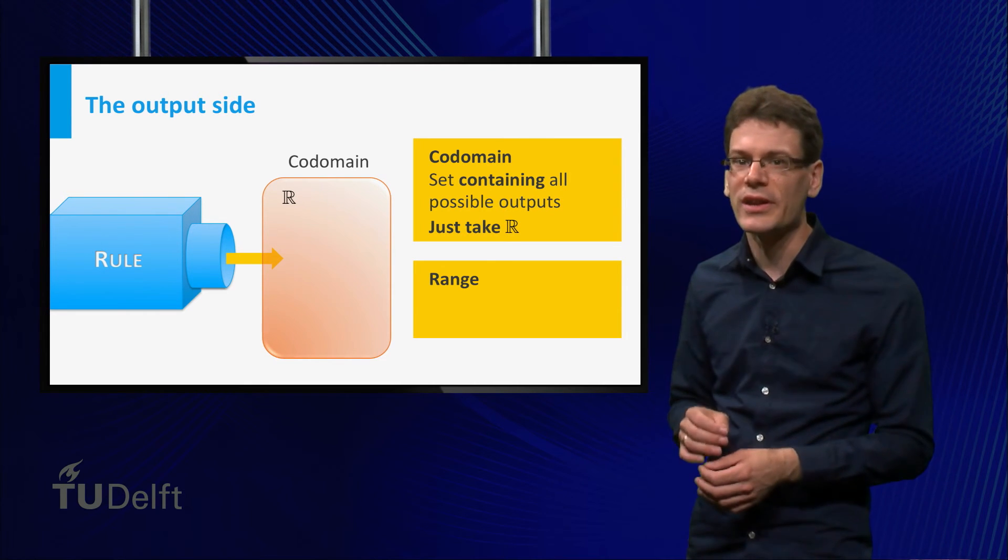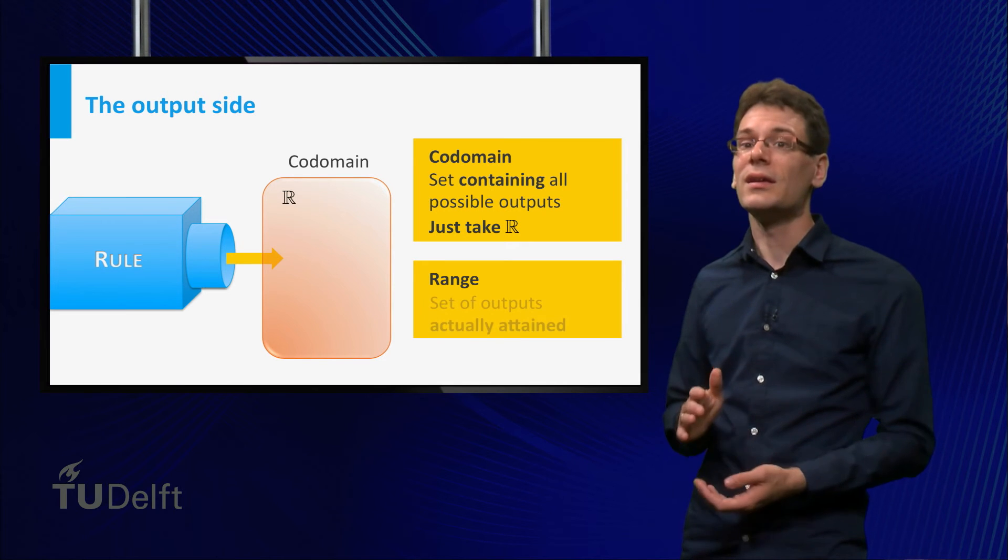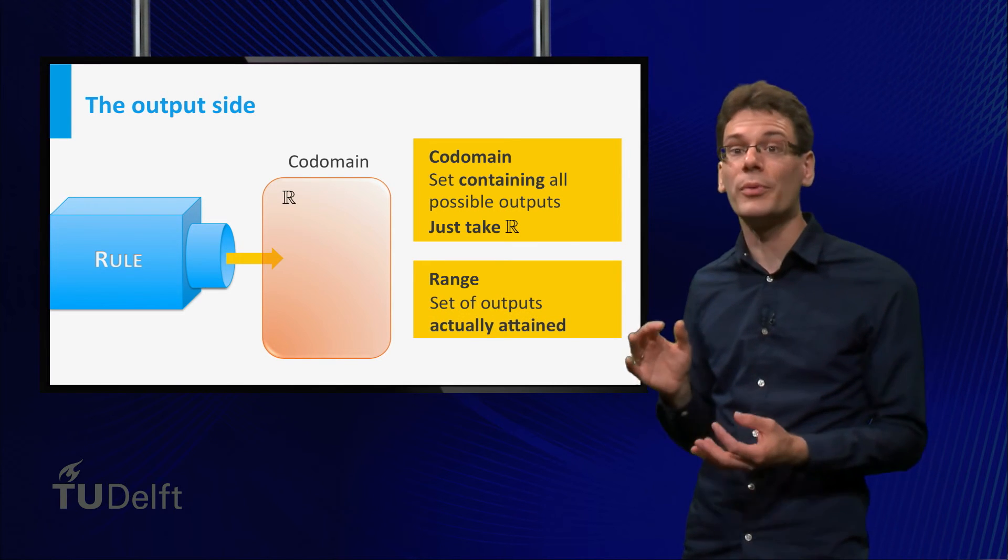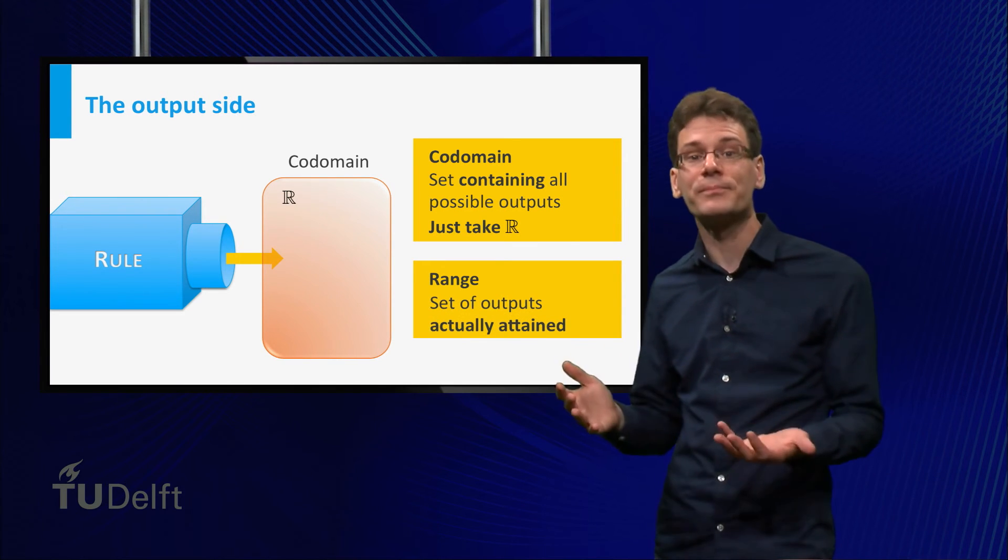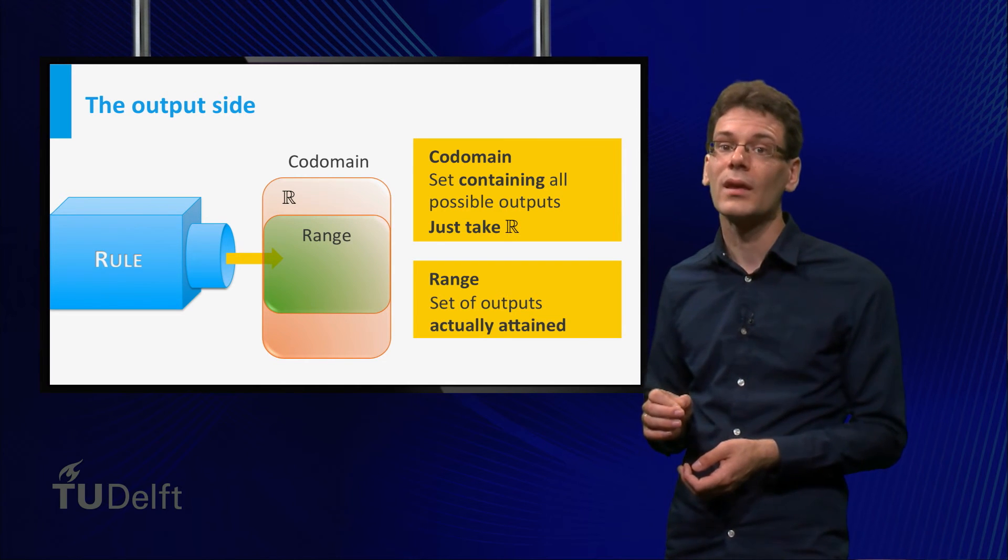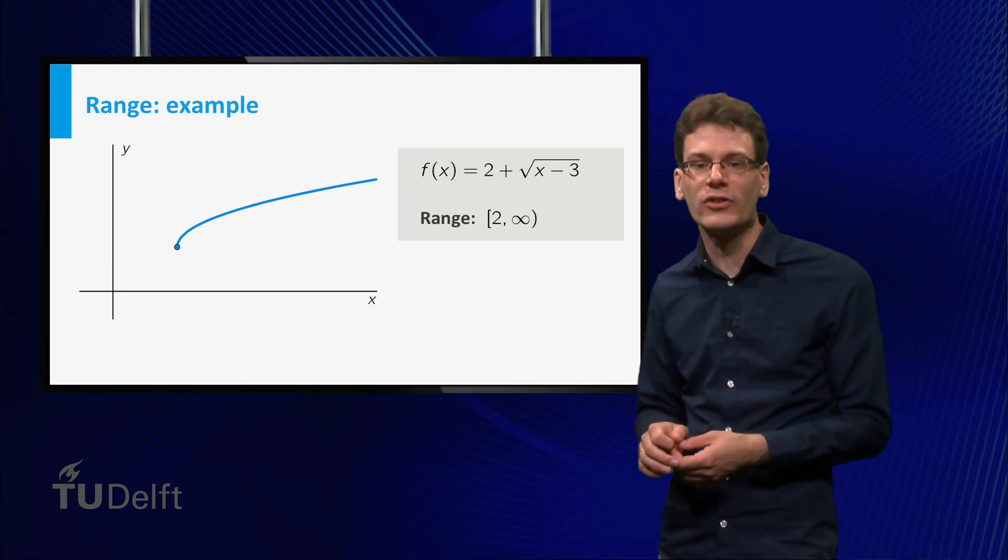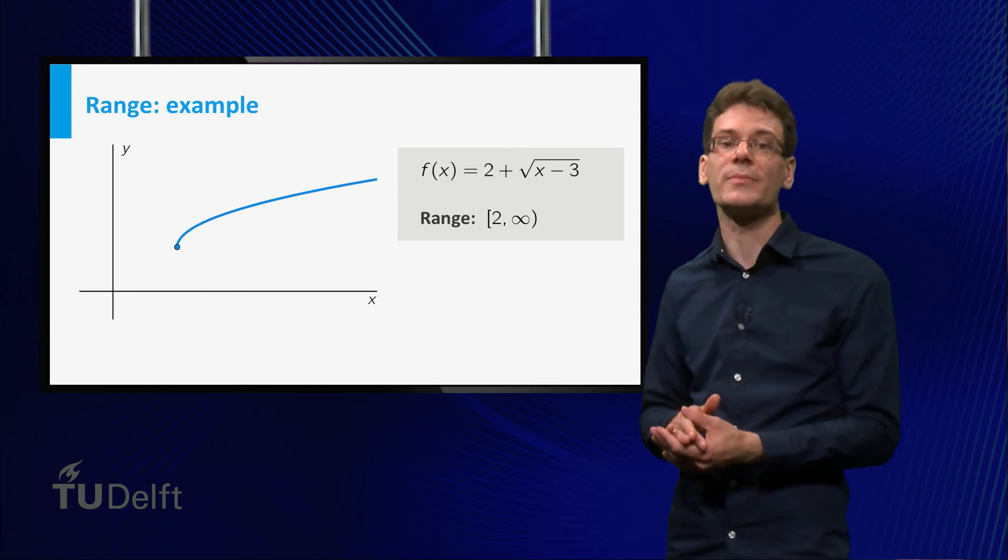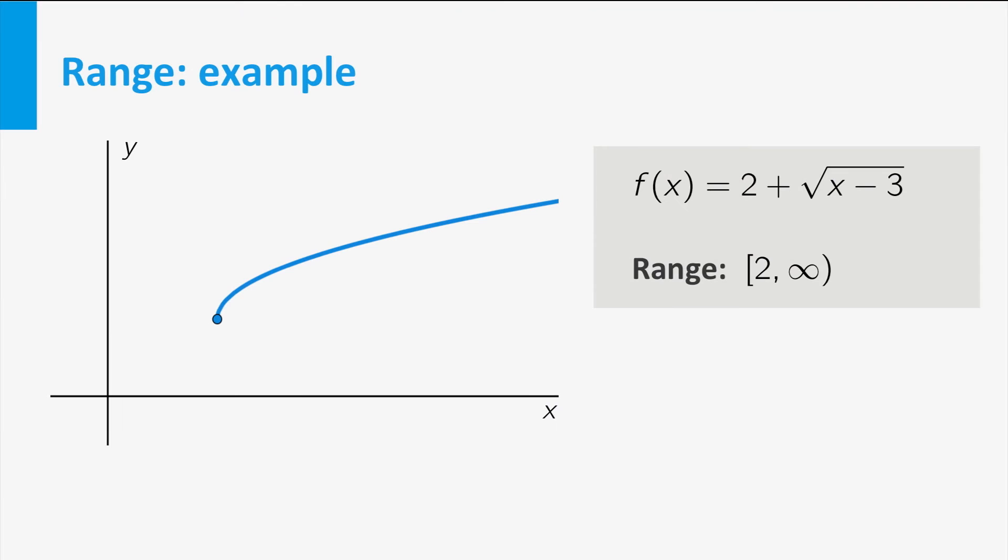Much more interesting is the range of a function. This is precisely the set of all possible values that the function can attain. Note, it can be smaller than the full codomain. Let's look again at the example function f(x) equal to 2 plus square root of x minus 3. In this case the range is the interval from 2 to infinity. You can clearly see this from the graph. It starts at height equal to 2 and then keeps increasing.